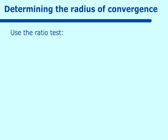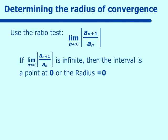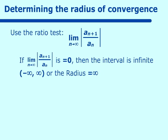The ratio test reads: the limit as n approaches infinity of the absolute value of a(n+1) over a(n). There are three conditions. If this limit is infinite, then there is only one point of convergence and that is at 0, so the radius is 0 and the interval of convergence is just the point 0. If the limit equals 0, then the interval of convergence is over all real numbers and is infinite.